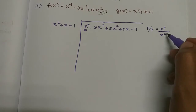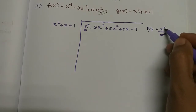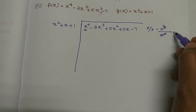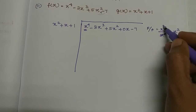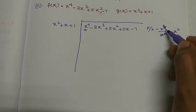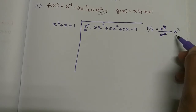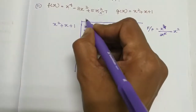Now proceed with the sum. First step: first term divided by first term. Here x to the power 4 divided by first term x squared — the power is subtracted: 4 minus 2 is 2. So quotient first term is x squared.